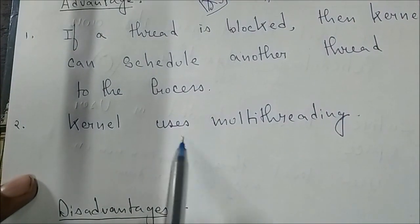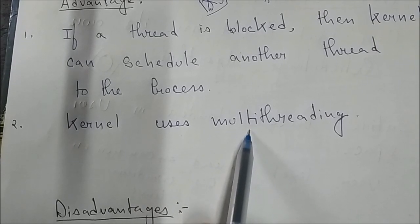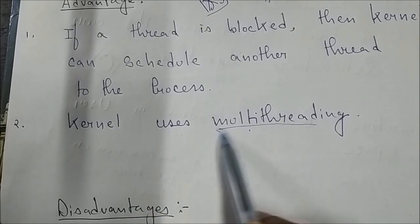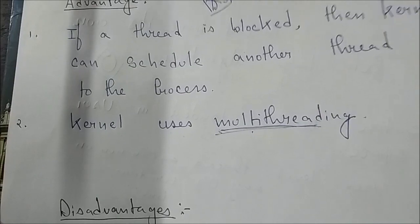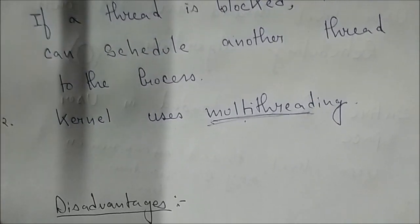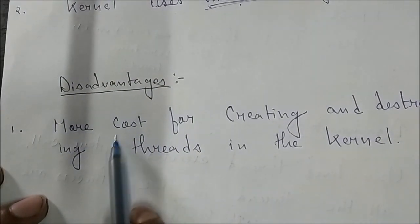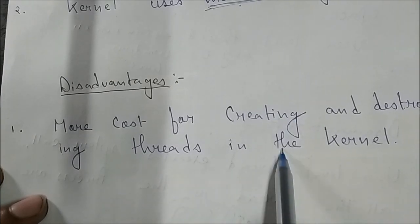Kernel level thread uses multi-threading. We have seen that user level thread does not use multi-threading — only a single thread can execute at a time. But in kernel level thread, it uses multi-threading. This is an advantage of kernel level thread.